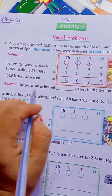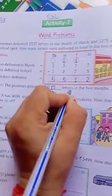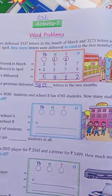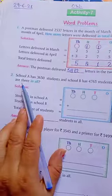Okay. The postman delivered 5,812 letters in the 2 months. He delivered this many total letters in both months. Now, in second number,